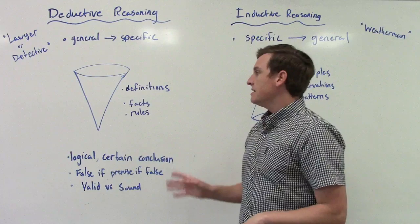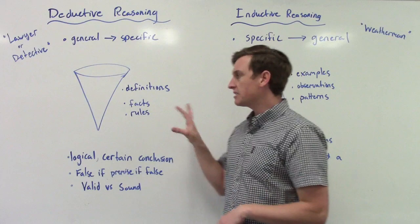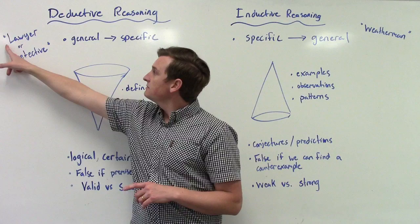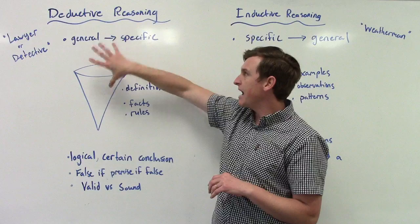So this is kind of the Euclidean style of logic, deductive logic, and this is the way the elements are written. You'll also see that we have lawyer and detective here as kind of like mnemonics or hints or keywords to remember that that goes with deductive reasoning.